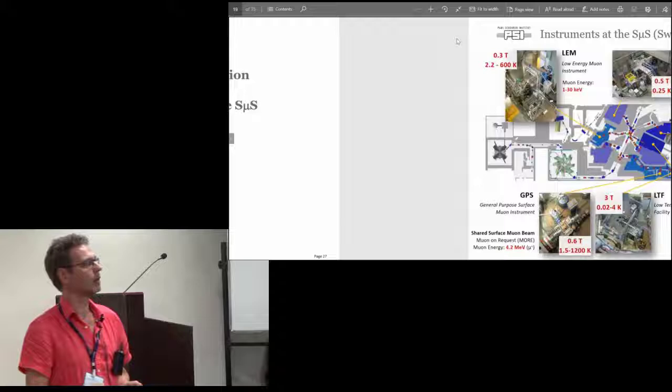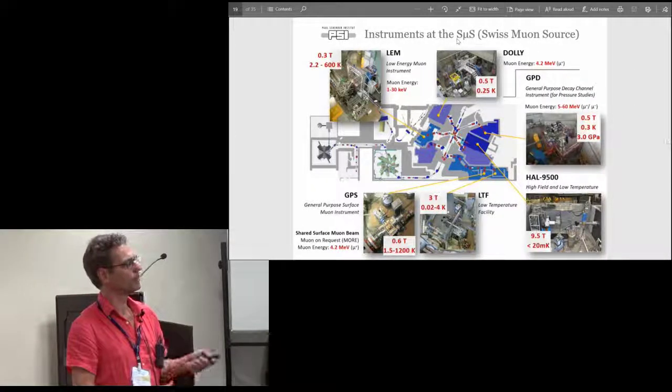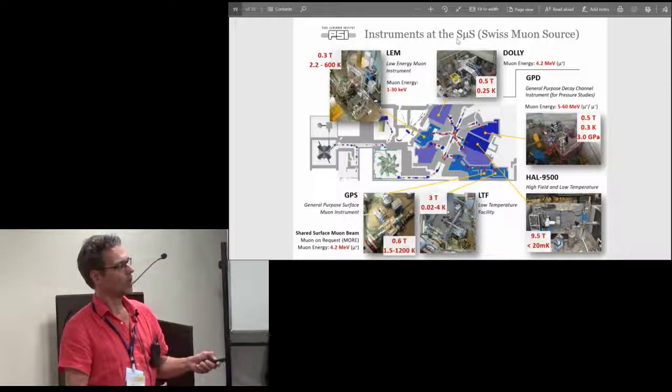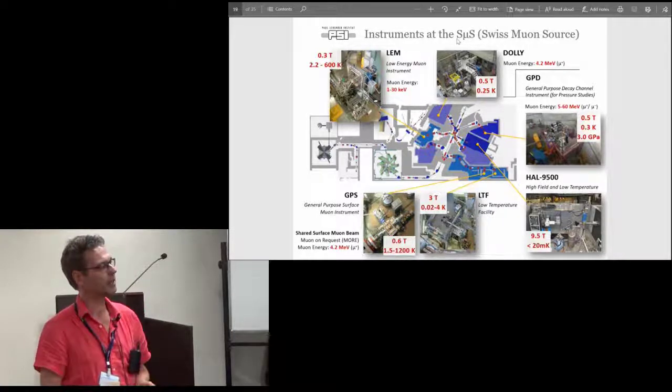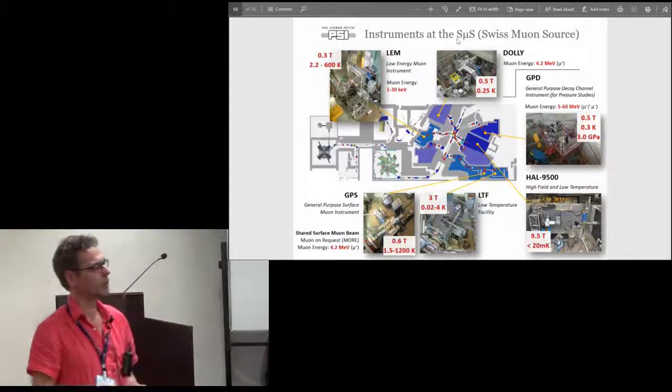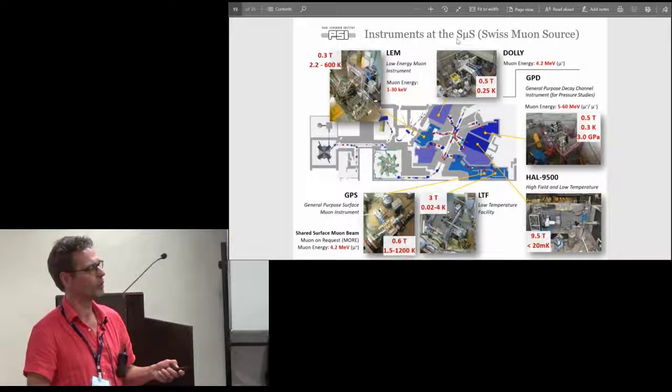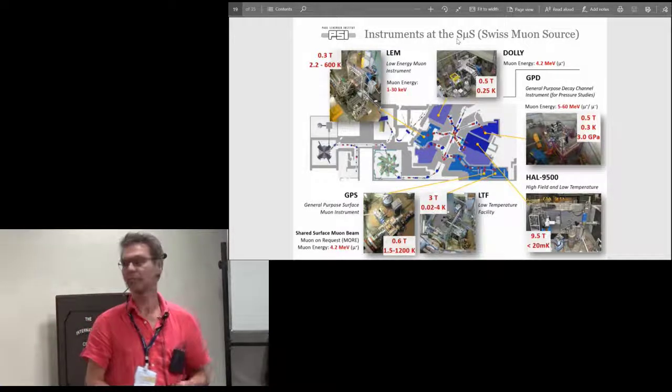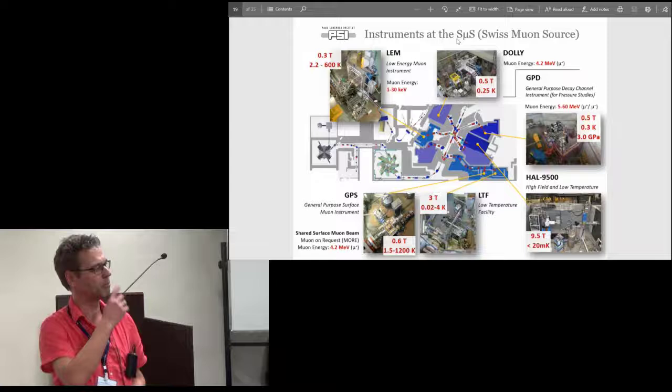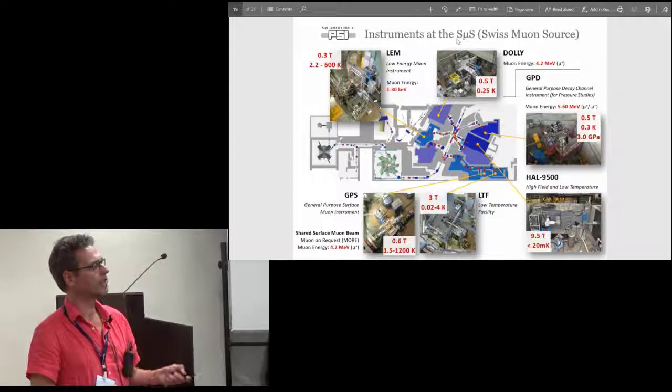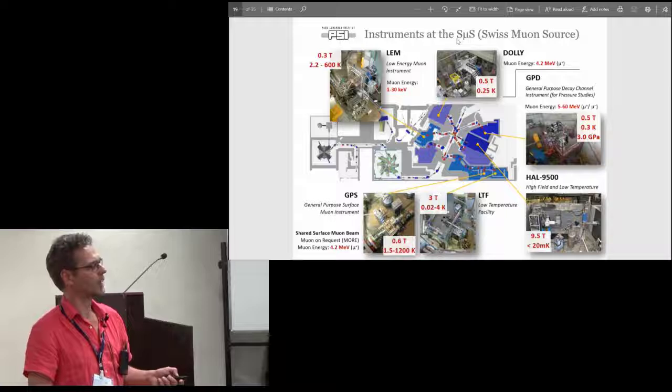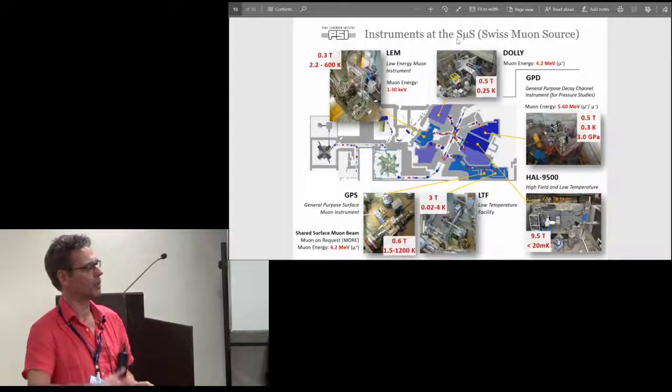The instrumentation that we have at our facility: this gives an overview. We have a three-stage proton accelerator, first stage, second stage, the main cyclotron which generates a proton beam up to 2.4 milliamps at 600 MeV, which is a beam power of 1.3 to 1.4 megawatts, the most powerful proton beam in the world still. This high intensity beam is sent to a first muon production target and a second one. You see these beam lines where you have dipole and quadrupole magnets to transport the beam and select the beam momentum or beam energy. We have six instruments which are all permanently installed for different purposes. Most of them use this 4 MeV surface muons where you can probe samples up to a few hundred micrometers depth.